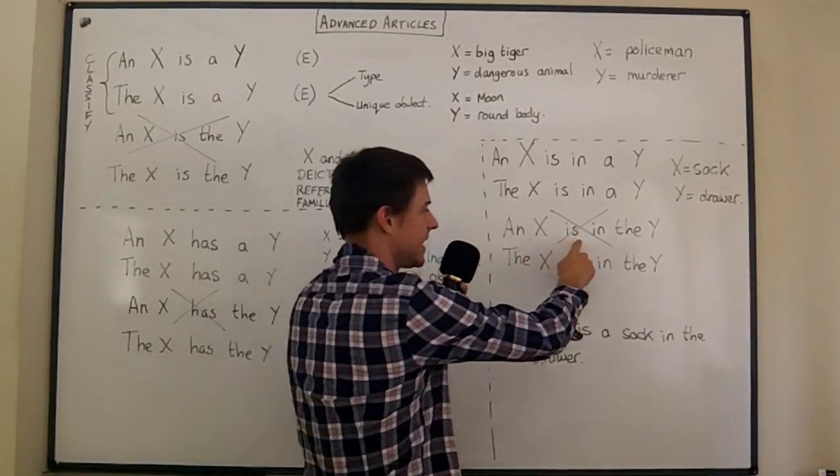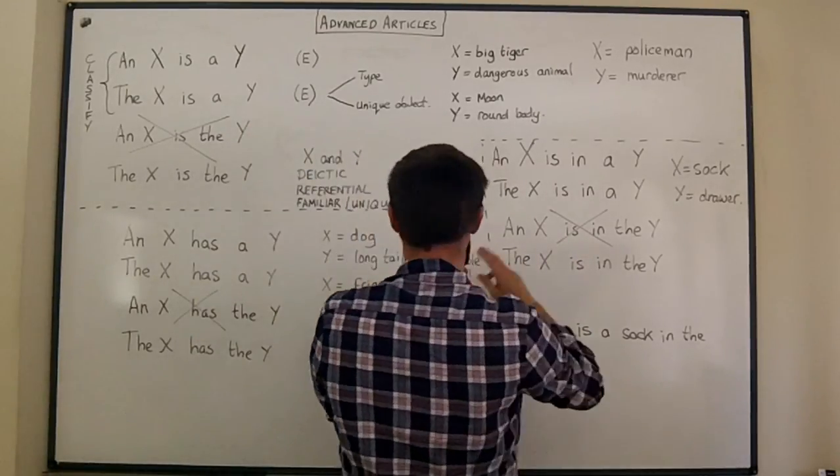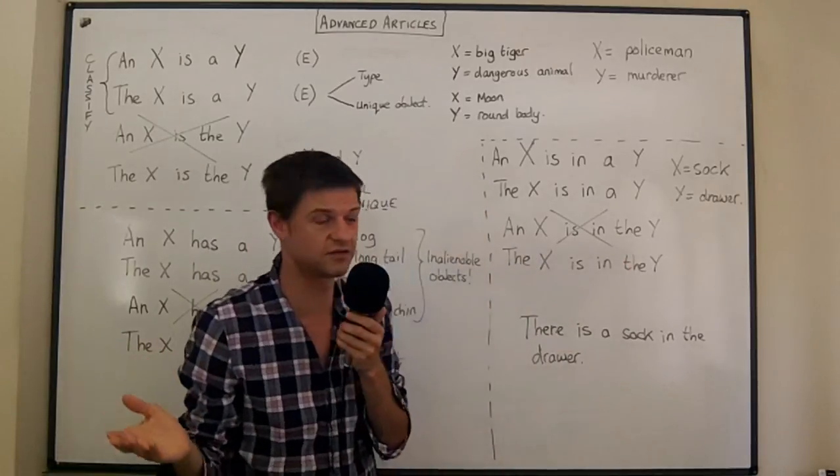But this one is very unlikely again. And so this is the one you want to avoid in to be and to have in these kind of sentences.